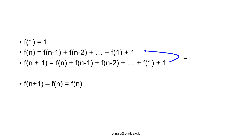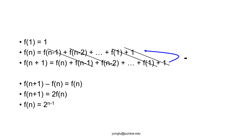We can find the closed form of f(N). f(N) is the sum of f(N−1), f(N−2), down to f(1), plus 1. f(N+1) is the sum of f(N), f(N−1), f(N−2), down to f(1), plus 1. If we subtract the first equation from the second, the left side has f(N+1) minus f(N), and the right side has f(N) left — all other terms cancel. Thus f(N+1) equals 2 times f(N). Since f(1) is 1, we obtain f(N) equals 2 to the power of N minus 1. Please notice that this conclusion is obtained through a rigorous mathematical process, not simply guessed from observations.